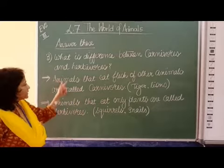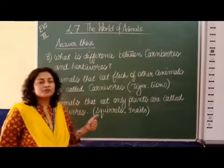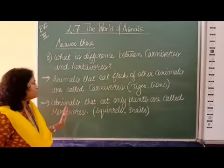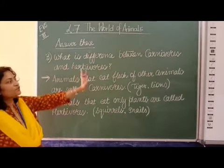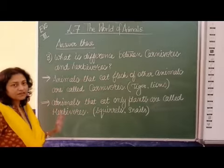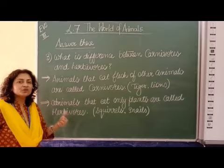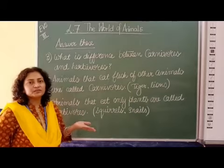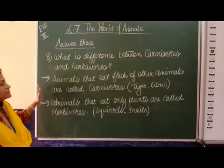Herbivore animals are totally opposite of carnivore animals. Animals that eat only plants are called herbivores. Like squirrels and caterpillars — they are called herbivore animals. Both have totally opposite differences: carnivores eat only flesh of other animals, herbivores eat only plants and don't eat any flesh. Omnivores eat both flesh and plants. Scavengers eat all decaying animals and decaying bodies. So these are the four categories of animals we have seen in the chapter.